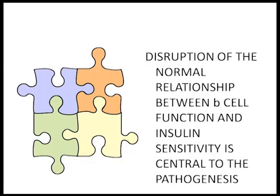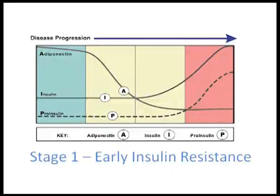There is no doubt at all that both coexist. How much is the question. This is not diabetes — this is the run-up to diabetes. In stage 1, there is very early insulin resistance where insulin and pro-insulin levels could be normal. Adiponectin could just be slightly dipping, and as you know, adiponectin is the one which confers insulin sensitivity on a person. This is what happens years and years before type 2 diabetes actually sets in.